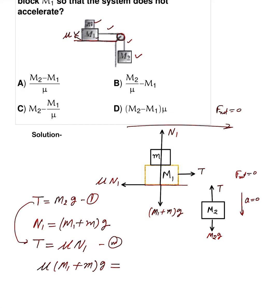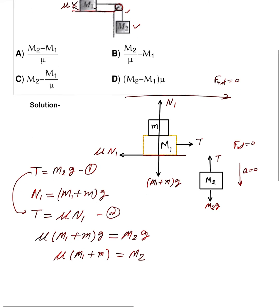Putting this value in, we get M2g equals mu times (M1 plus m)g. Canceling g, mu times (M1 plus m) equals M2. So M1 plus m equals M2 divided by mu. Therefore, small m equals M2 divided by mu minus M1.